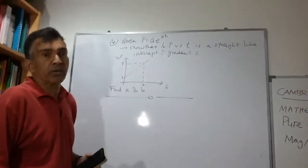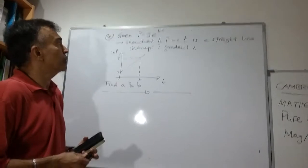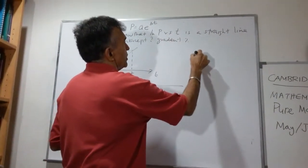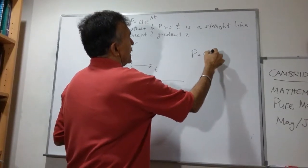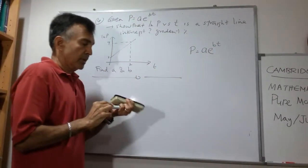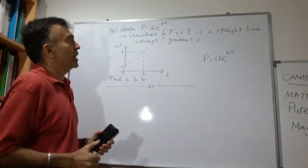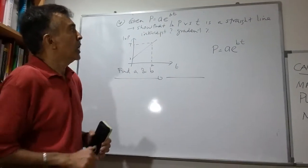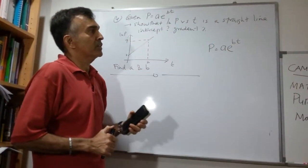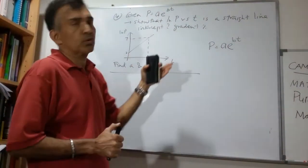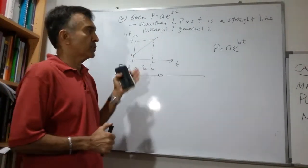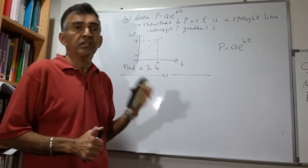We are given a relationship P equals to, let me write it here again, P equals to A times E to the power of BT. And we are asked to show that log P to base E versus T is a straight line. We are asked to state the intercept and the gradient, and then they gave you a graph and asked you to find the values of A and B. So let's start slowly.